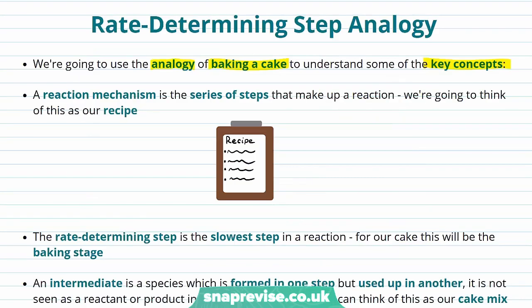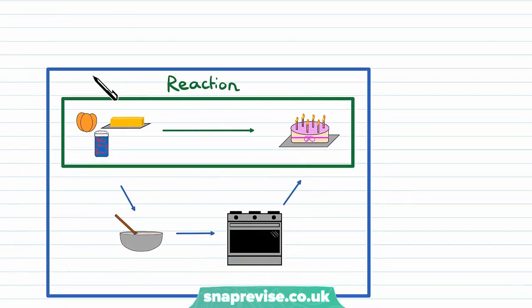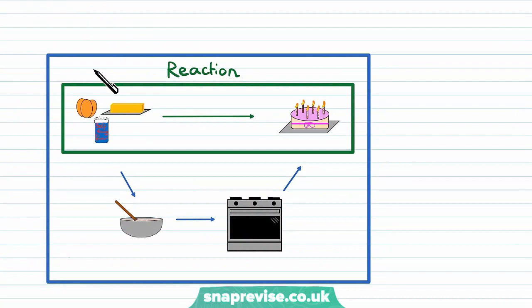The first new term we're going to talk about today is a reaction mechanism. A reaction mechanism is a series of steps that make up a reaction. We're going to think of these as our recipe. We've got the overall reaction in green, and then the big blue box surrounds the entire reaction mechanism, our recipe for today. You start off with the ingredients, mix them into cake mix, bake them in an oven, and then form the cake. All of that process is our recipe, which is equivalent to our reaction mechanism.